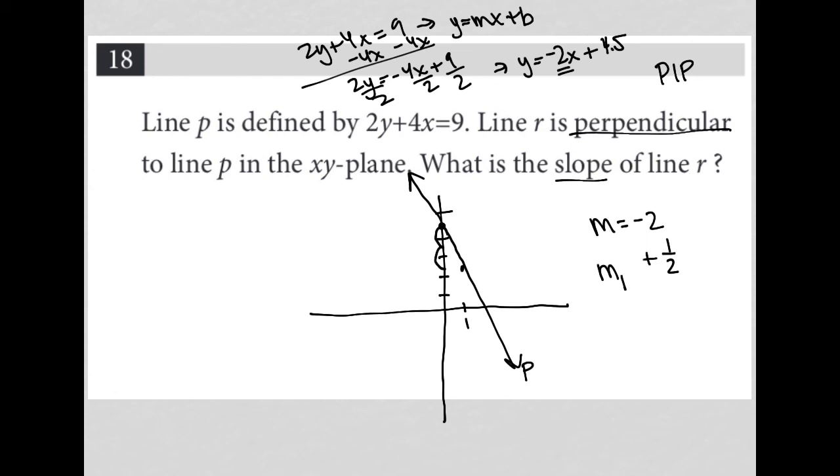So my perpendicular slope is 1 half. Your answer to this question should be 1 half. You're bubbling in 1 divided by 2.